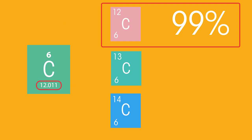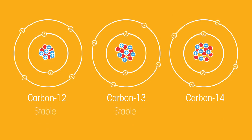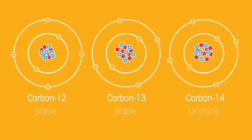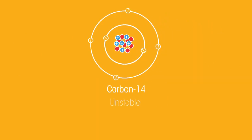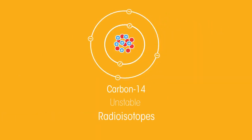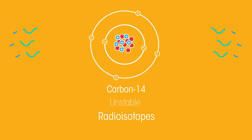Only very precise measurements can show this. Some combinations of protons and neutrons are stable, but some are unstable. These are called radioisotopes because, when they break down, they give out nuclear radiation. Which we'll look at in the next video.